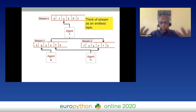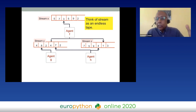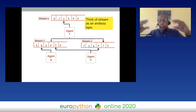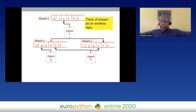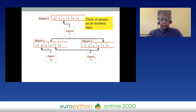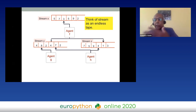Think of a stream as a tape. An agent can read the entire tape but writes only at the tail of the tape and keeps writing to the tail. When the input changes, an agent becomes active if its output doesn't match its input, and at some time later the agent takes a step.